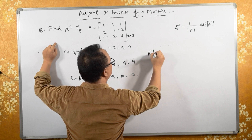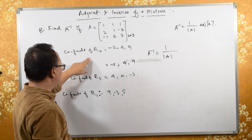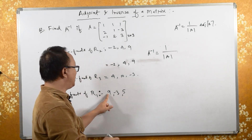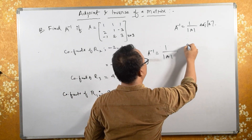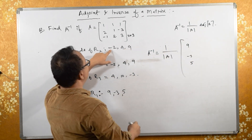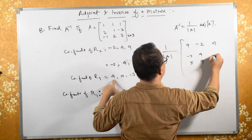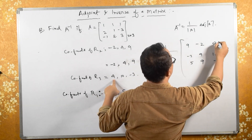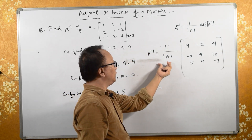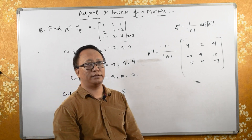Therefore, A inverse equals 1 by determinant of A times adjoint of A. The adjoint is formed by transposing the cofactor matrix — writing each row as a column. R1 [9, -3, 5], R2 [−2, 4, 9], R3 [4, 10, −3] become columns. That value of determinant A times this adjoint gives the required answer for A inverse. Thank you.